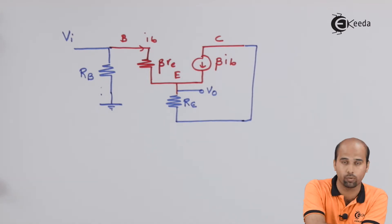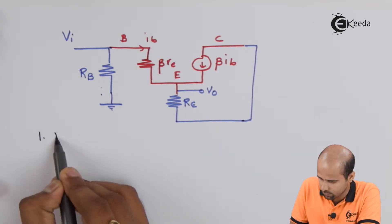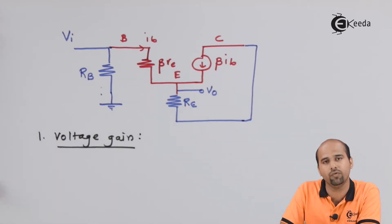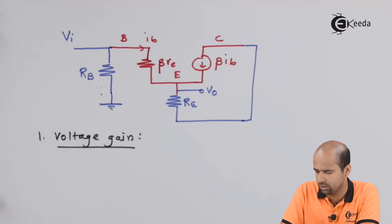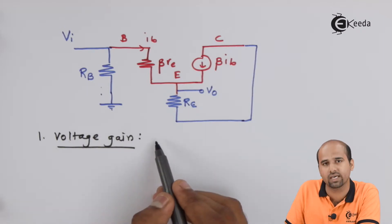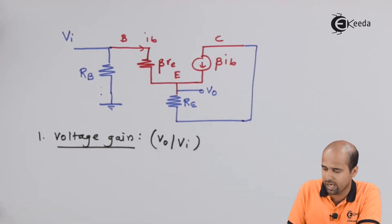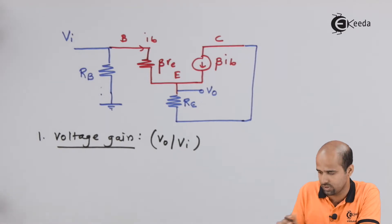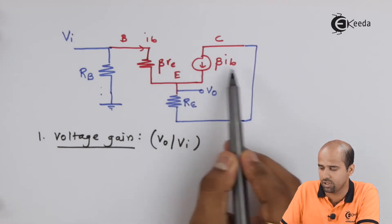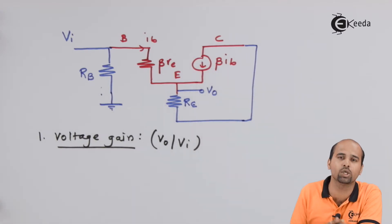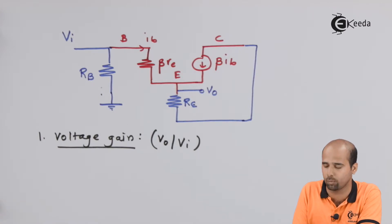We will calculate all four parameters. First is voltage gain. We will simplify VO divided by VI by calculating separate values of VO and VI in terms of current. The agent (control variable) remains the same: IB in the RE model, V-pi in the R-pi model, and IB again in the H-parameter model.